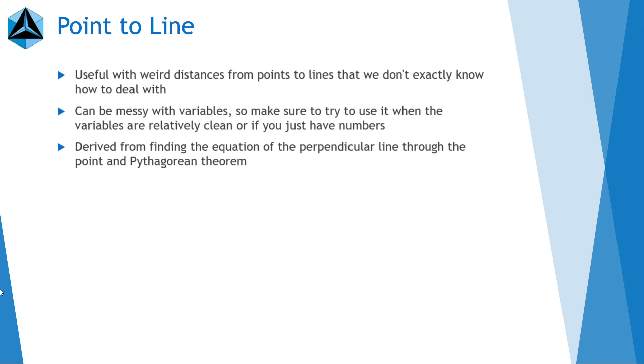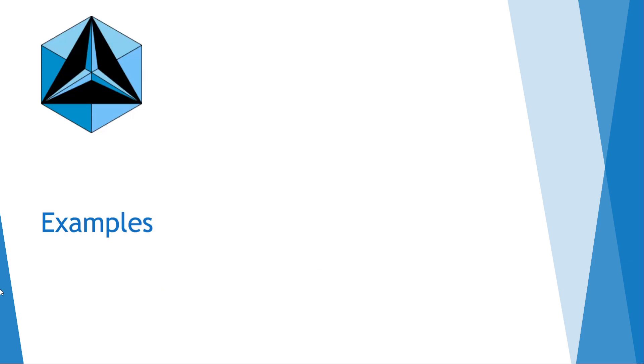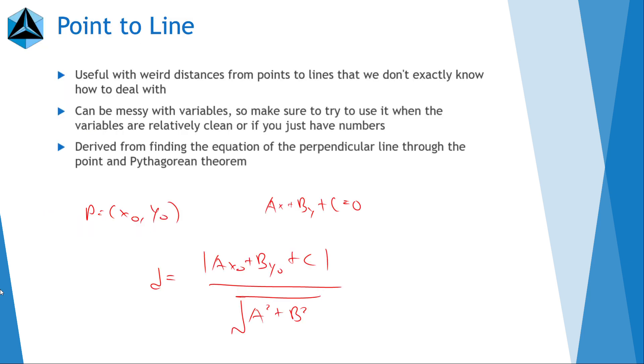So what it is if you're given a point p equals x0 comma y0, and you want to find the distance to a line ax plus by plus c equals zero, then the distance is equal to the absolute value of ax0 plus by0 plus c over square root of a squared plus b squared. So that's point to line.